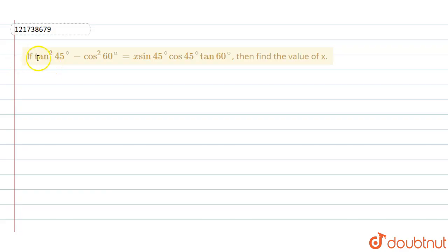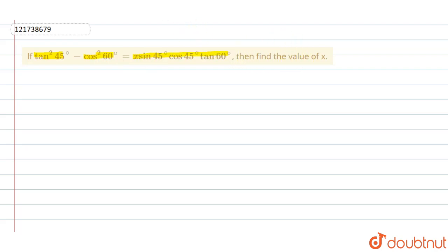Welcome guys. If tan squared 45 degrees minus cos squared 60 degrees equals x sin 45 cos 45 tan 60 degrees, then find the value of x.